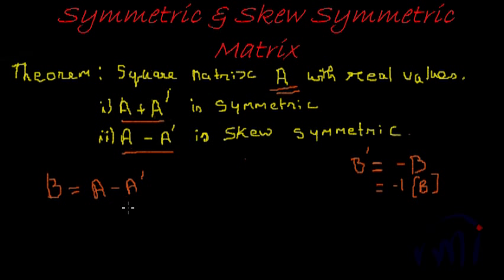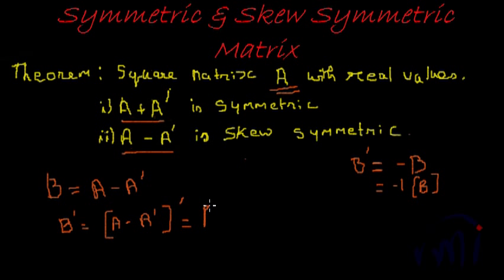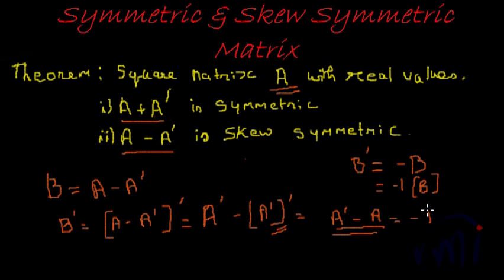Let us see if it is true. We have B equal to A minus A transpose. So B transpose would be A minus A transpose, whole transpose. Expanding using the properties of transpose, we have A transpose minus A transpose whole transpose, which is nothing but A transpose minus A. This, again from the properties of transpose, is nothing but minus of B. Hence, A minus A transpose will be a skew symmetric matrix.